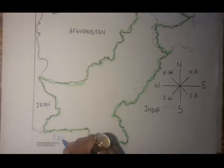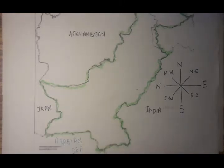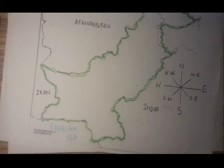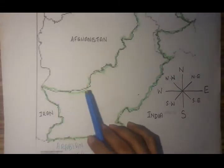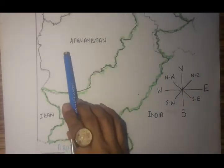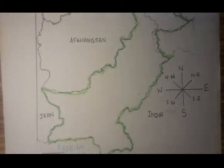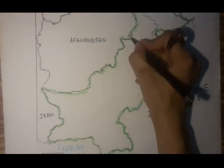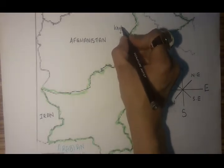So we are landlocked on three sides, and on the fourth side we have a border with the Arabian Sea. We share the longest border with Afghanistan, and we are connected to Afghanistan by a pass called the Khyber Pass. That pass is located over here — this is the Khyber Pass.